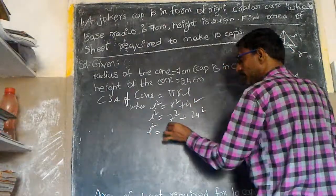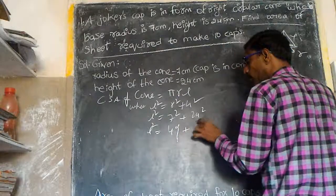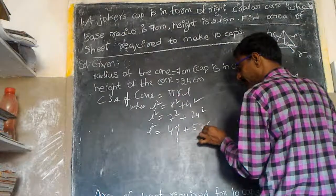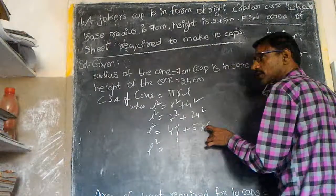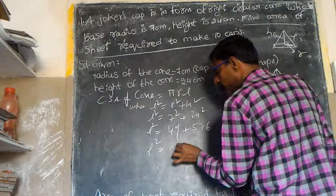So L² is equal to 7×7 is 49, 24×24 is 576. So L² is equal to 49 plus 576, which is 625.